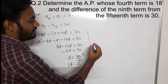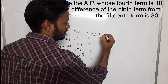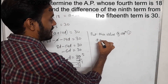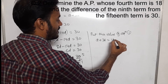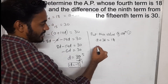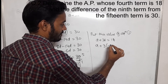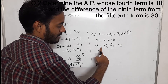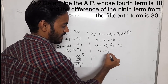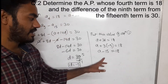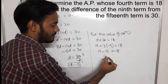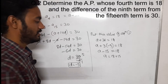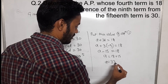Now we put this value of D into equation 1 to get the value of A. That is: A plus 3D equals 18, D is minus 5. So A plus 3 into minus 5 equals 18, giving A minus 15 equals 18. Minus 15 becomes plus 15 on the other side, then A equals 18 plus 15, so A equals 33.